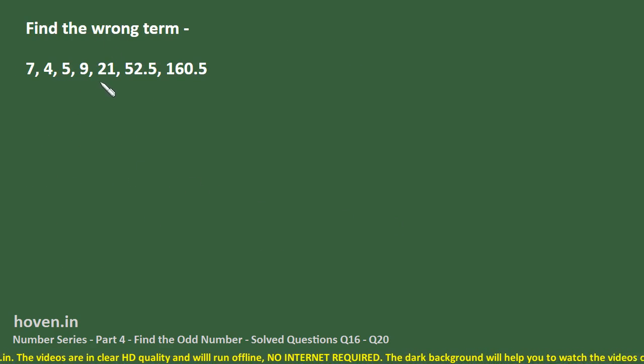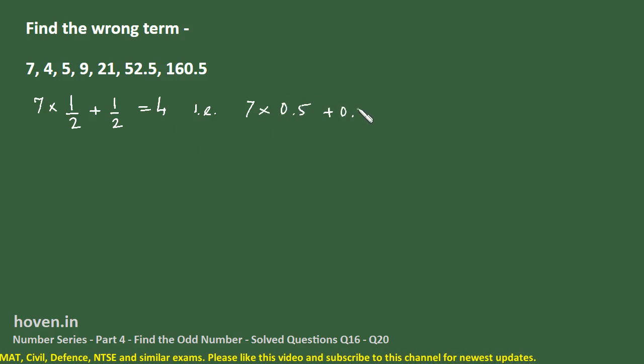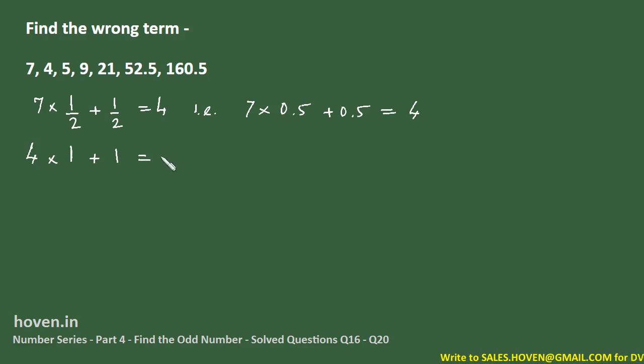Find the wrong term: 7, 4, 5, 9, 21. Now wherever these dots appear, they are always very complicated questions and they are always very scary questions. And here another problem is that it is decreasing then increasing. So one hint from these dots is that we will have to use fractions in this case. Let us now roughly try to write 4 from 7. We can write 7 into half plus half, it gives 4. That is 7 into 0.5 plus 0.5, so 3.5 plus 0.5 will give me 4. Let me check up for 4.